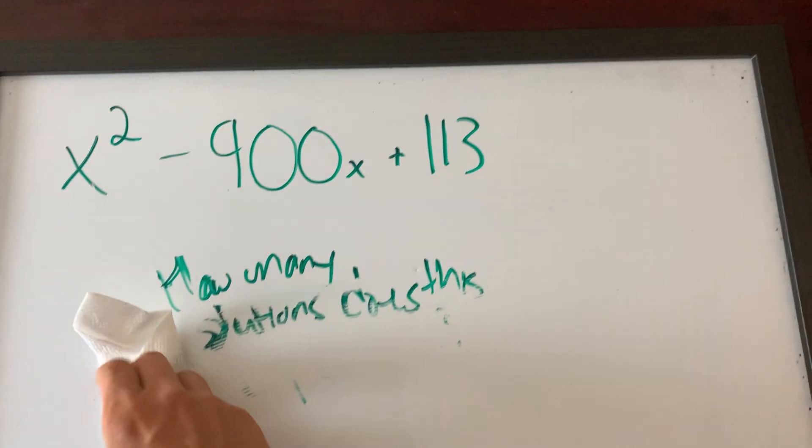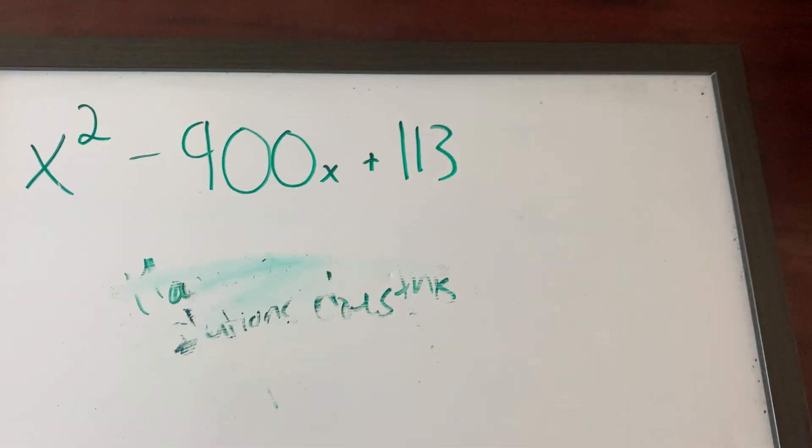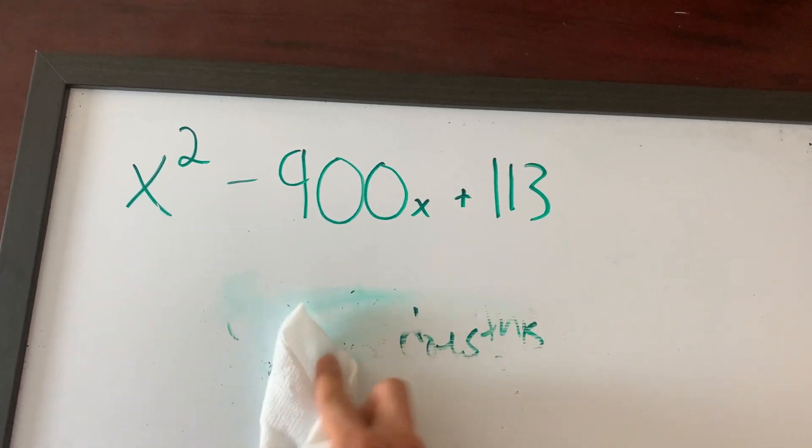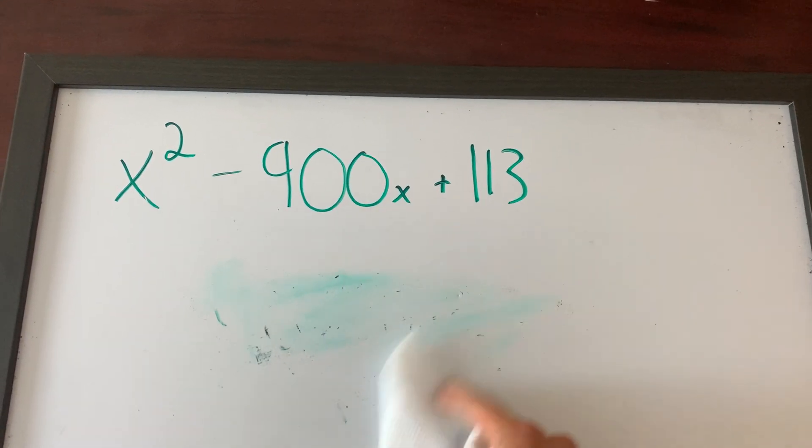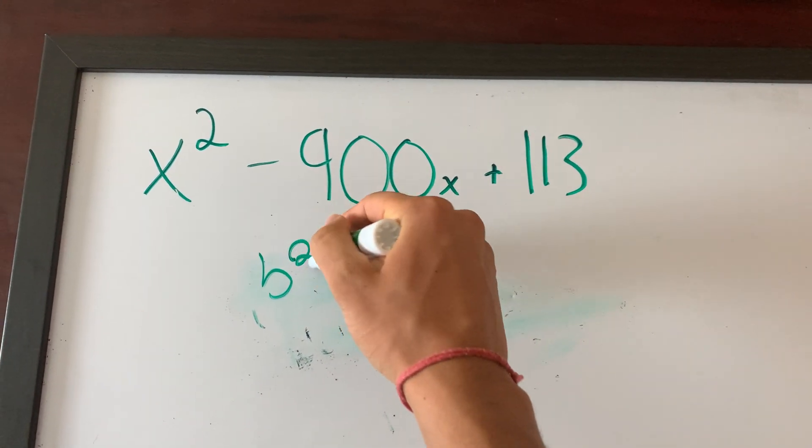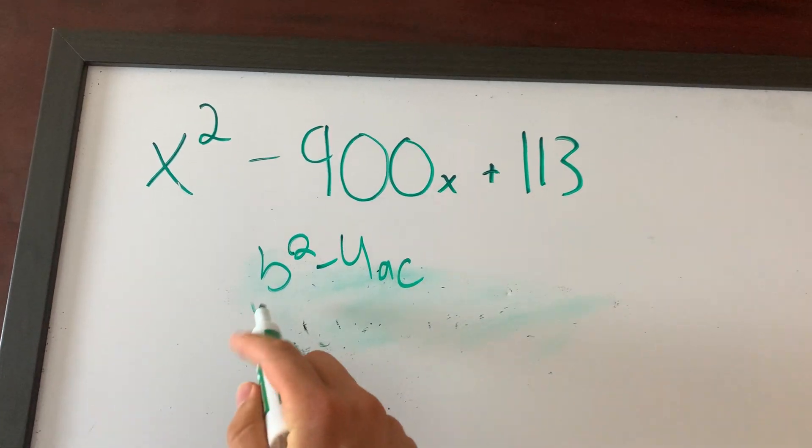Alright, now that you guys hopefully have paused the video and tried it on your own, if you guys know the trick, then good for you. If you don't, I'm sure you just went through some misery. So, let me show you how to do it real quick. There's something called a discriminant, right? B squared minus 4ac. That is what you call the discriminant.